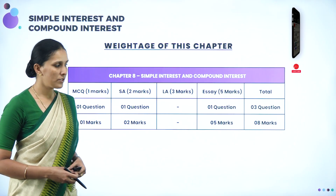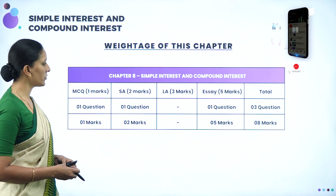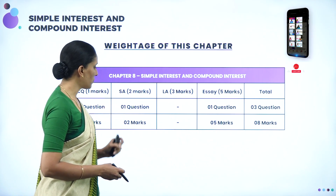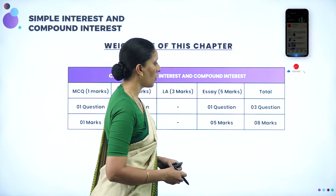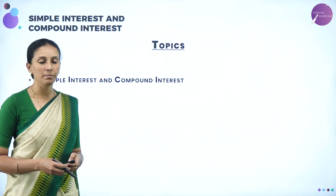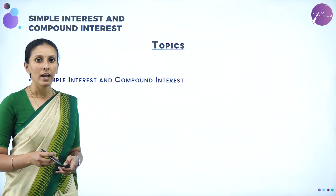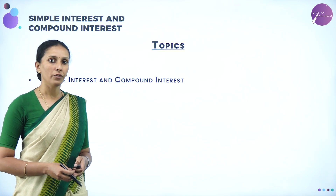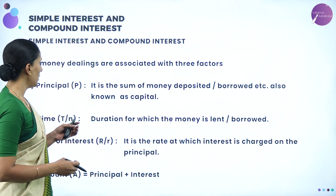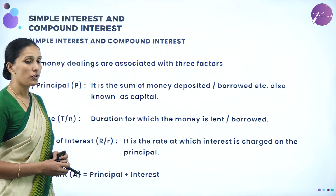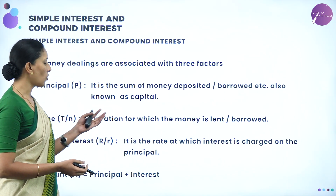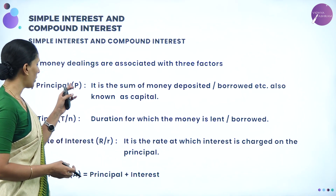Let us see the weightage of this chapter. Under simple interest and compound interest, you will be having one MCQ question, one short answer for two marks, and one question under five marks — overall three questions for eight marks. All dealings are associated with three factors: the principle, time, and rate of interest. The principle is the sum of money which is deposited or borrowed, also known as the capital, and it is always denoted by P.